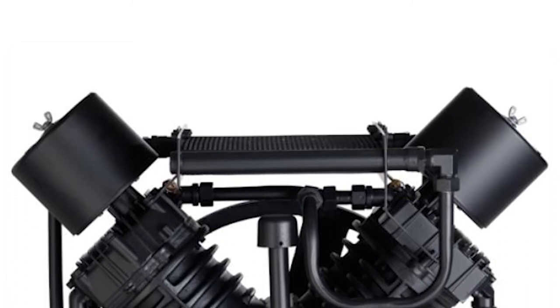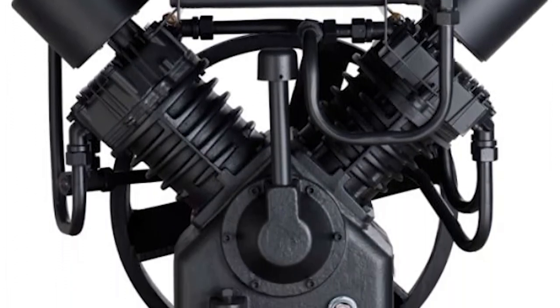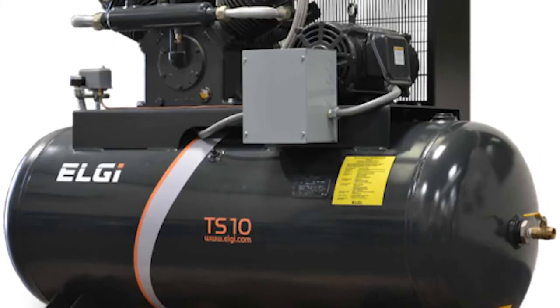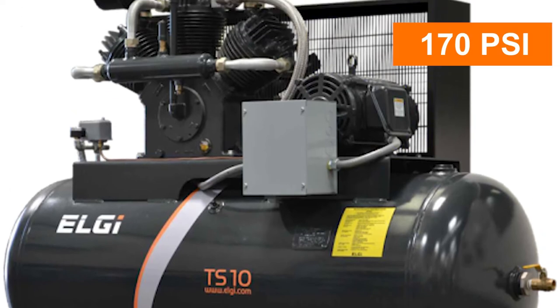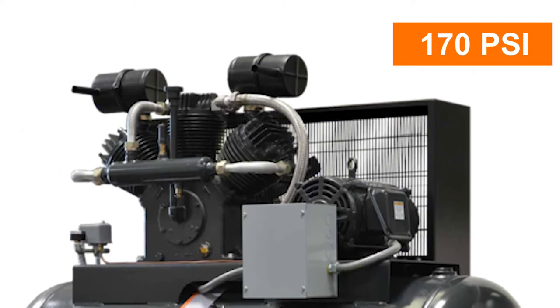On the other hand, double stage compression is essential to run heavy machinery in factory or industry-based setups which require continuous supply of compressed air pressure of about 170 psi in order to run heavy-duty equipment.